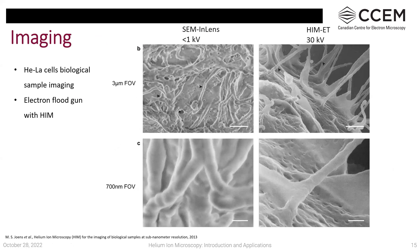Moving to the applications section: one of the best published comparisons shows an SEM image with an in-lens detector versus a helium ion microscope image with the ET detector, both of a biological sample with no coatings. On the HIM, an electron flood gun neutralized positive charge. The HIM image is very clear — the features and edges of HeLa cells are visibly sharper. The SEM was optimized below 1 kV landing energy, yet the zoomed comparison clearly shows higher resolution with the HIM.